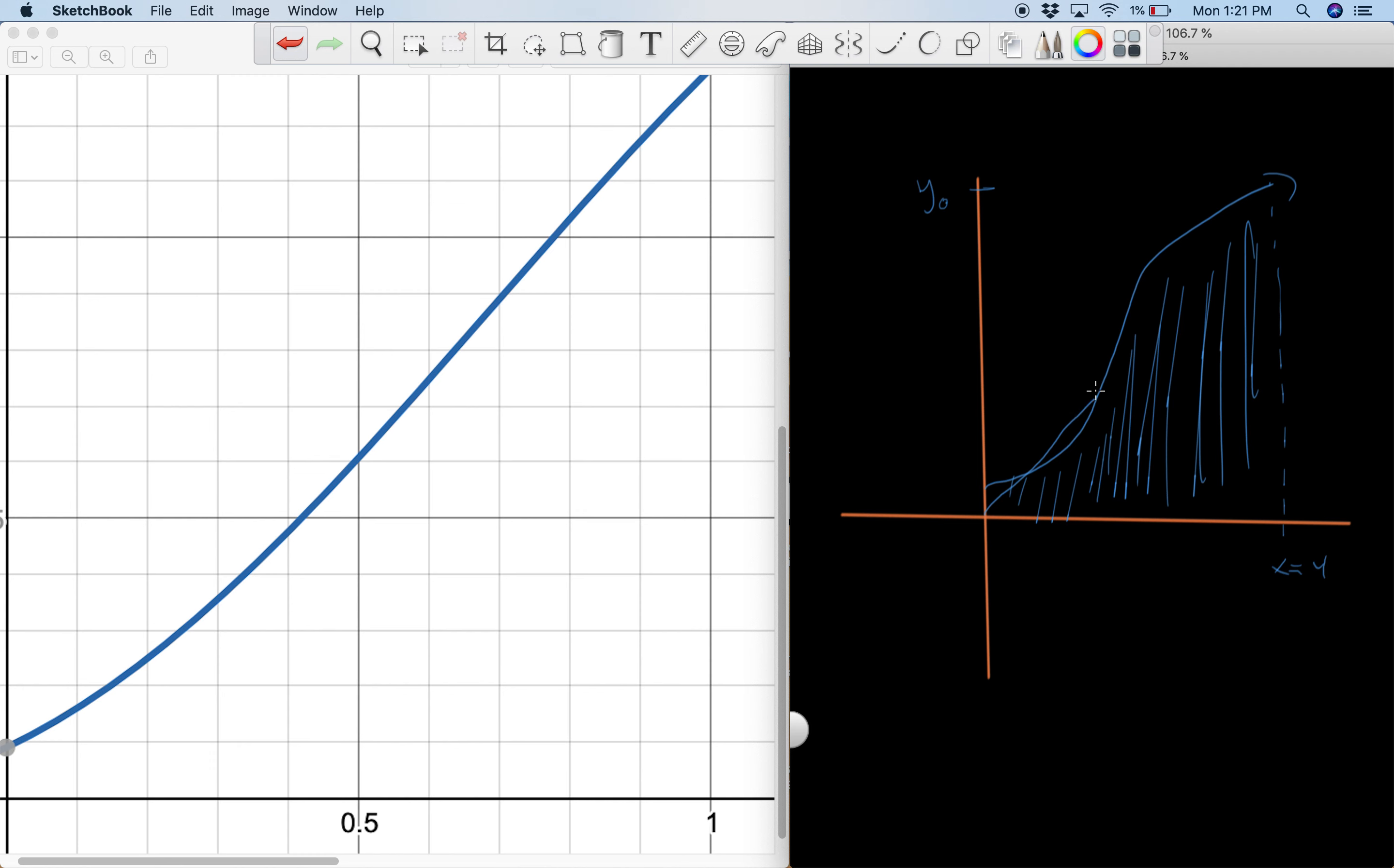What we could do is we can sort of estimate it as a triangle, right? We can say that it's sort of a triangle that looks like that, and we can just find the area of that triangle and that will give us a good estimation. Or another way we can estimate it is we can find the area of a bunch of rectangles that look like this.